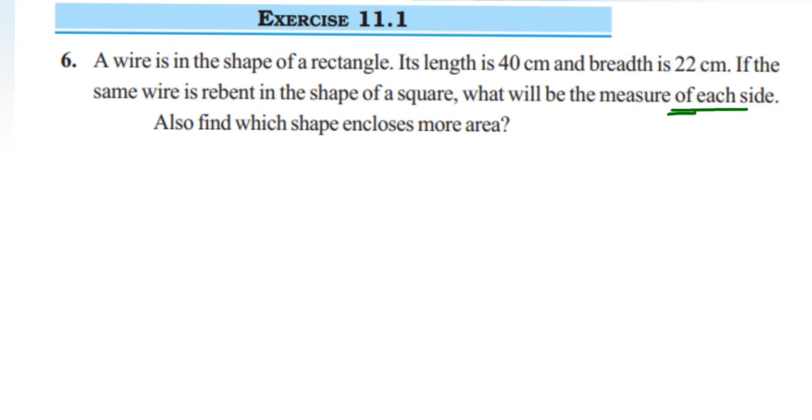To do that, we're going to use this relation. What is the relation? They have given that the same wire that is used to make a rectangle is rebent and made into the shape of a square.